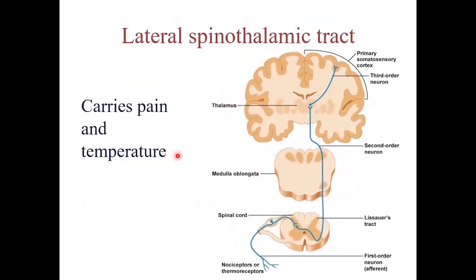The lateral spinothalamic tract is responsible for pain and temperature. The signals enter the spinal cord through the posterior horn cells, then cross to the opposite side at the same level and ascend in the contralateral spinothalamic tract all the way to the brain.